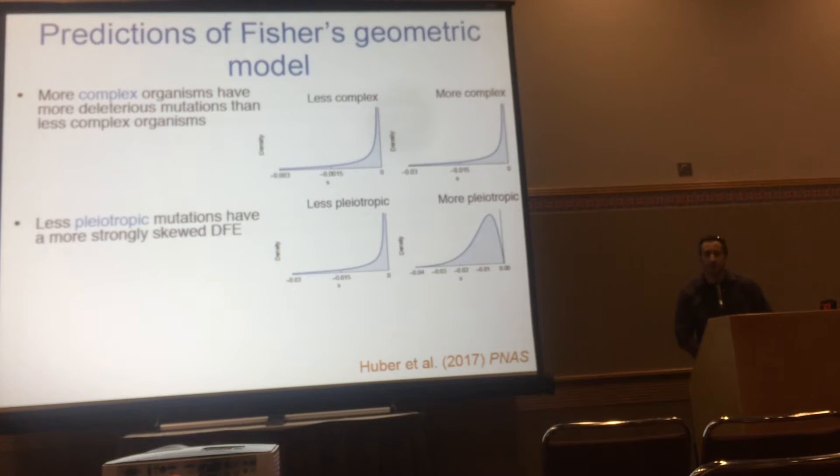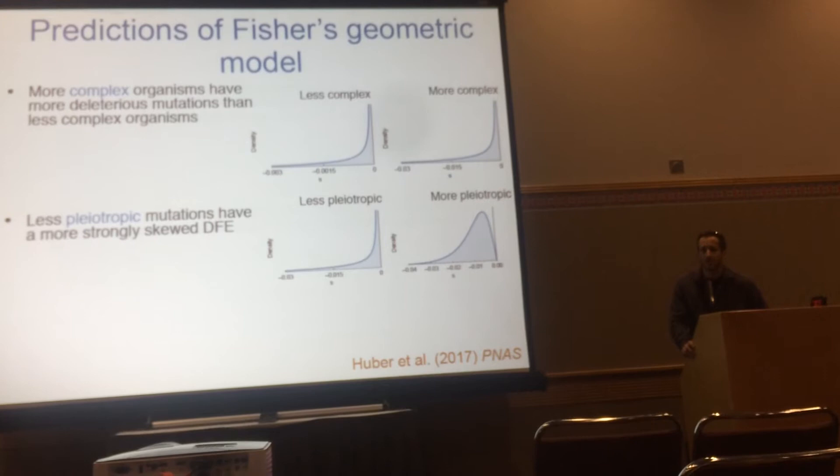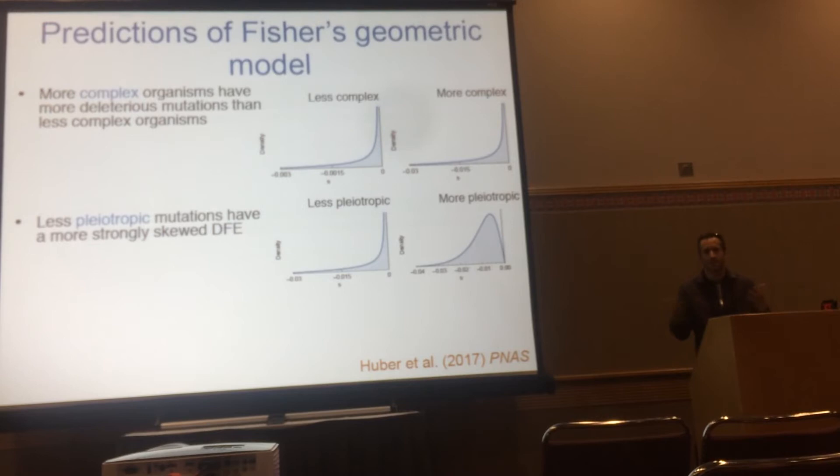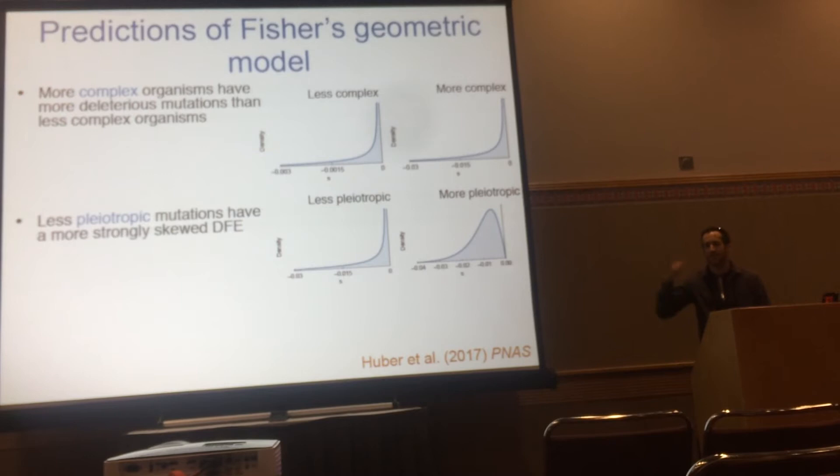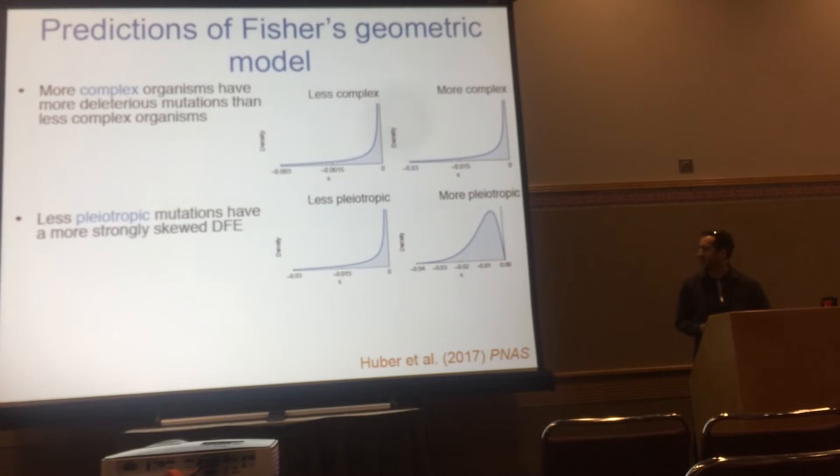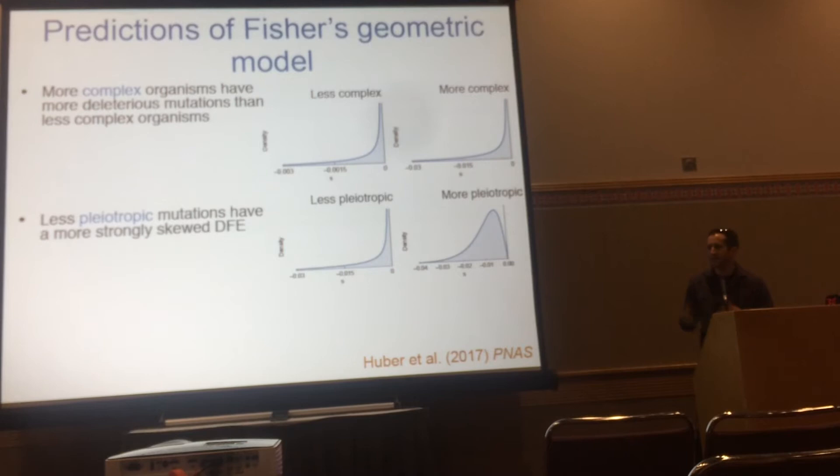A second prediction concerns pleiotropy: less pleiotropic mutations ought to have a more strongly skewed distribution of fitness effects. The intuition is that for less pleiotropic mutations — those affecting only a small number of phenotypes — depending on whether that phenotype is related to fitness, you might see many neutral mutations as well as many strongly deleterious ones, creating a more skewed distribution. More pleiotropic mutations average over more phenotypes, so their distribution tends to be less skewed.